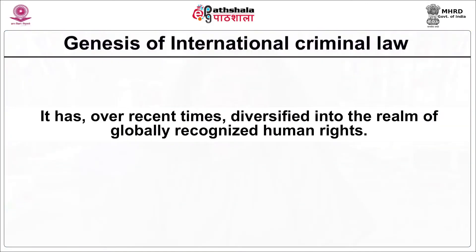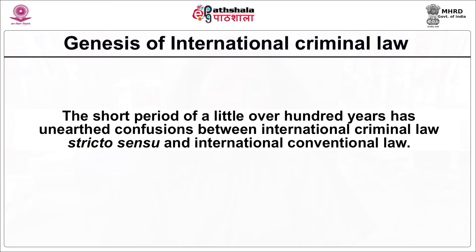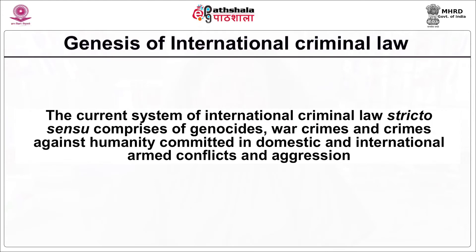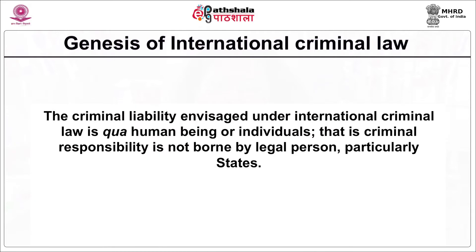Let us begin with the genesis of international criminal law. Originally, international criminal law stricto sensu concerned itself only with peace and security of the international community. However, in recent times it has diversified into the realm of globally recognized human rights. The short period of a little over 100 years has unearthed confusions between international criminal law stricto sensu and international conventional law. The current system comprises genocide, war crimes, crimes against humanity committed in domestic and international armed conflicts, aggression, and terrorism.